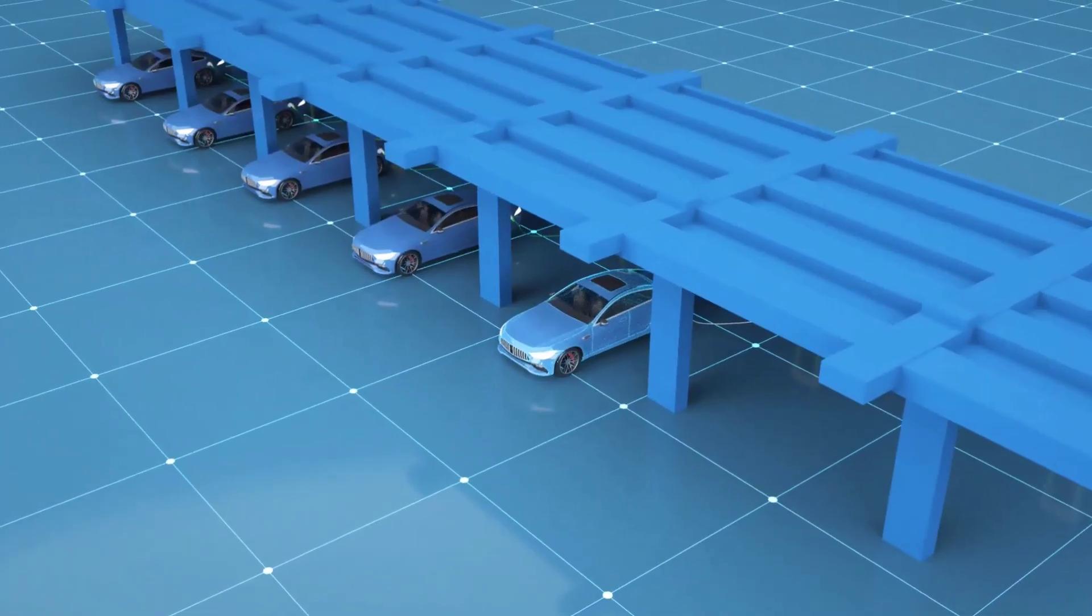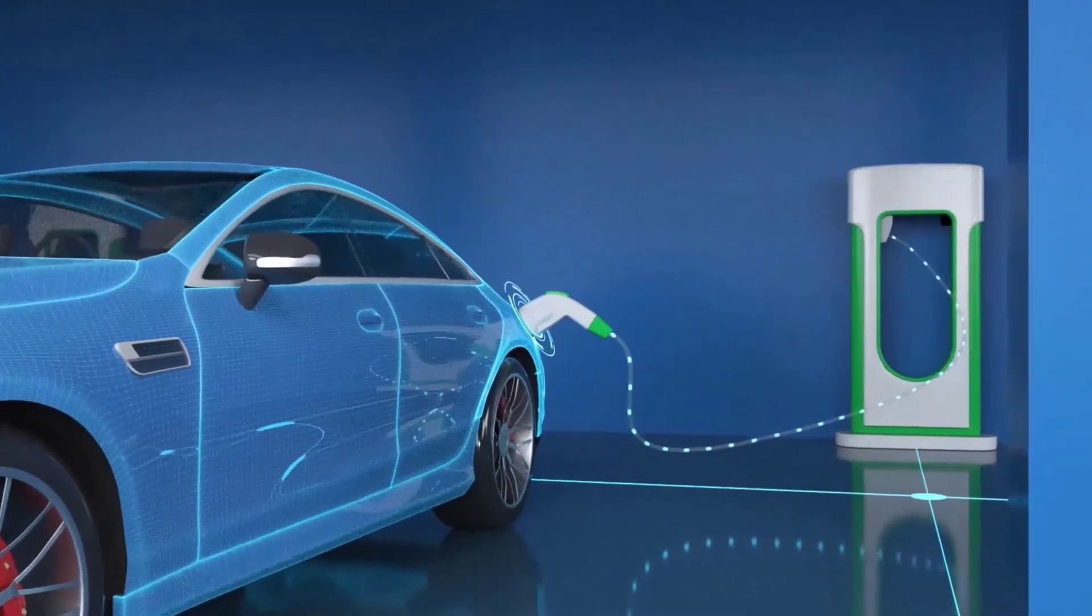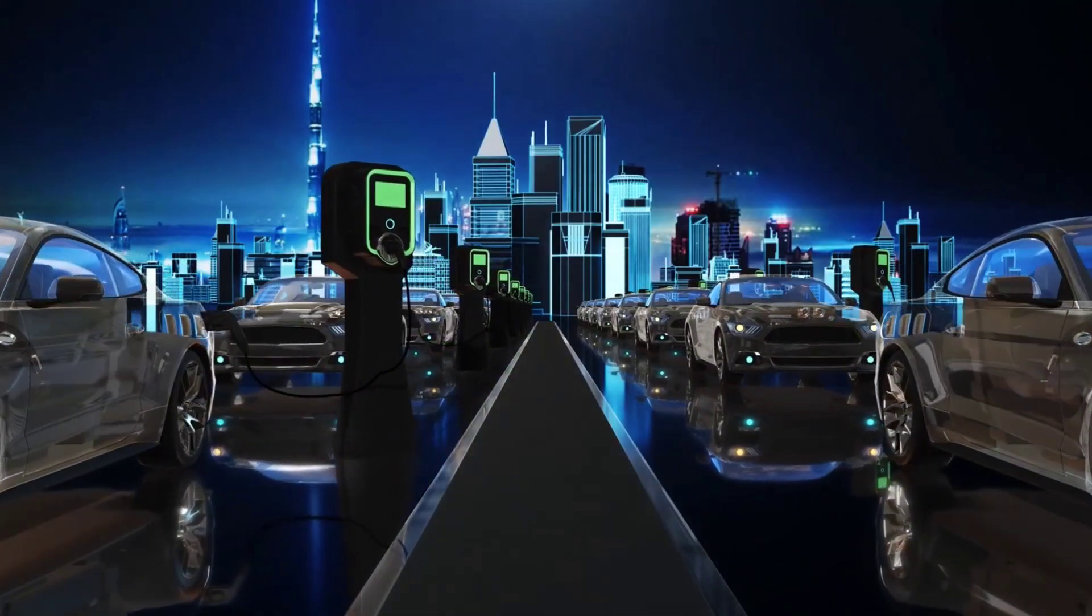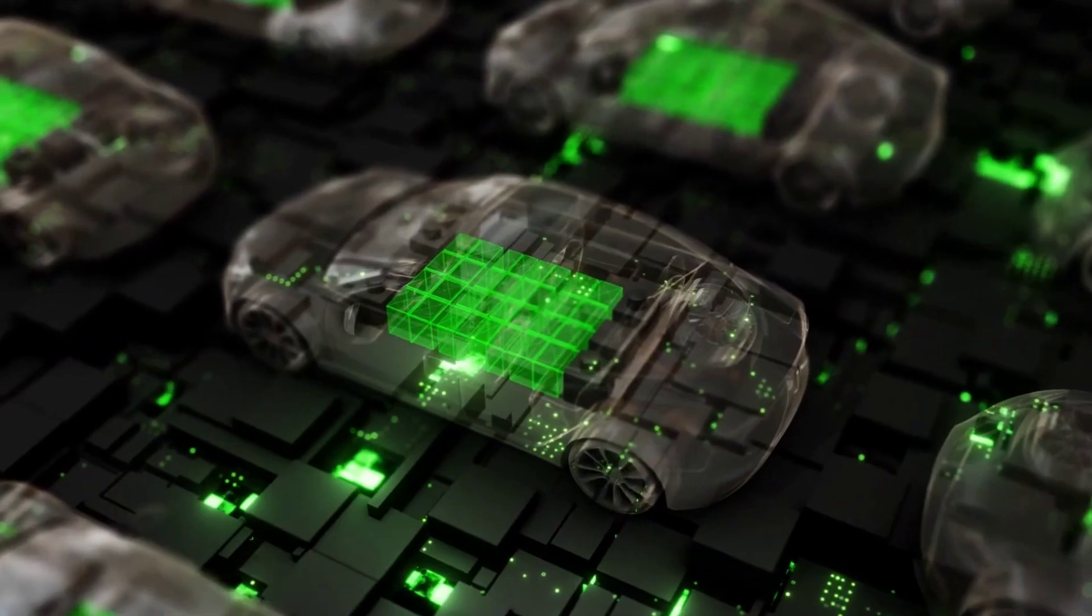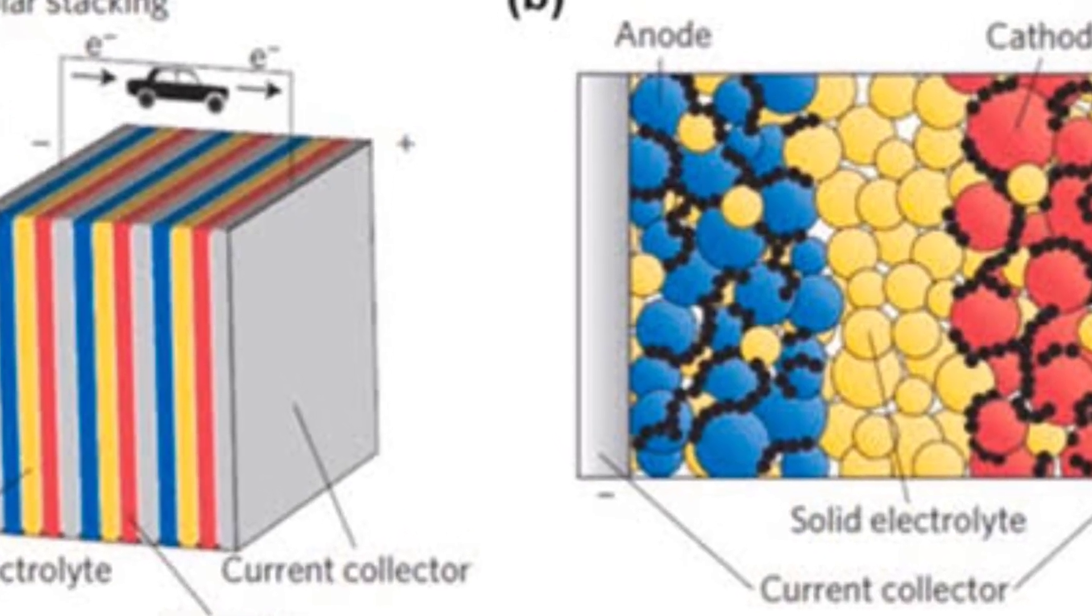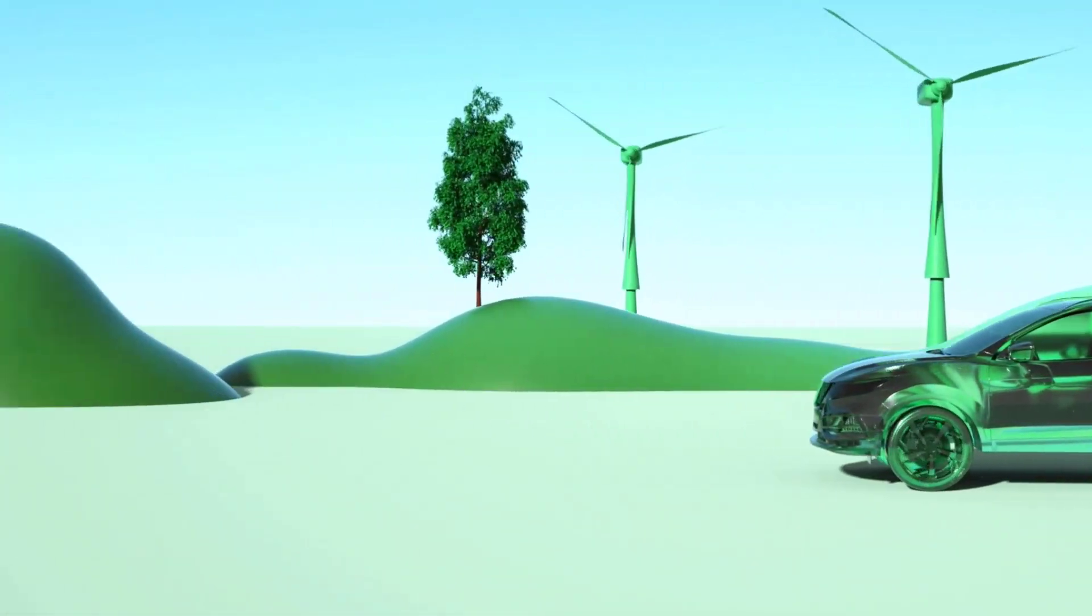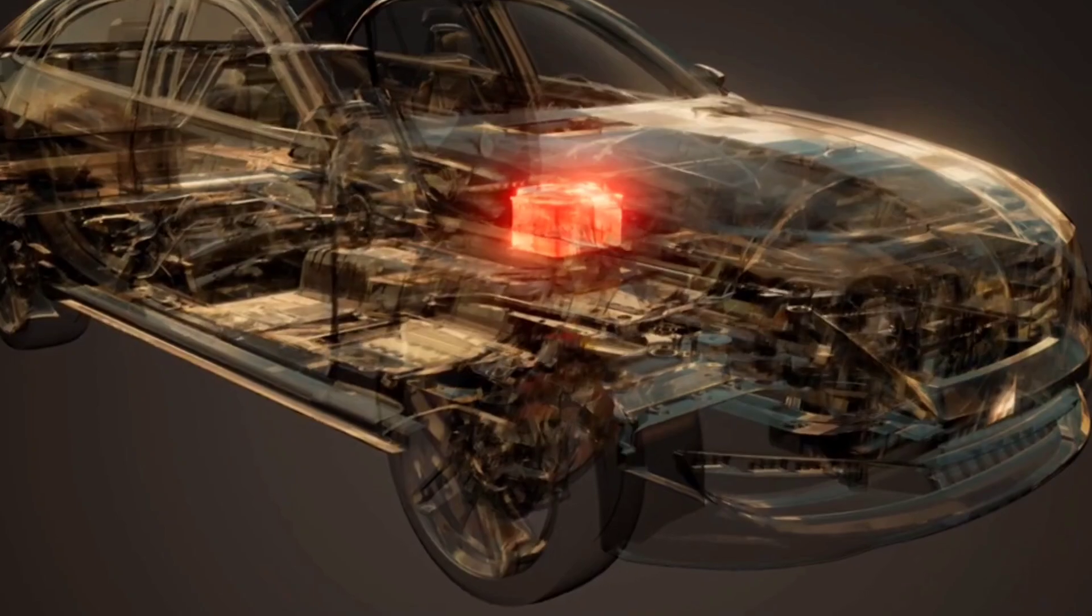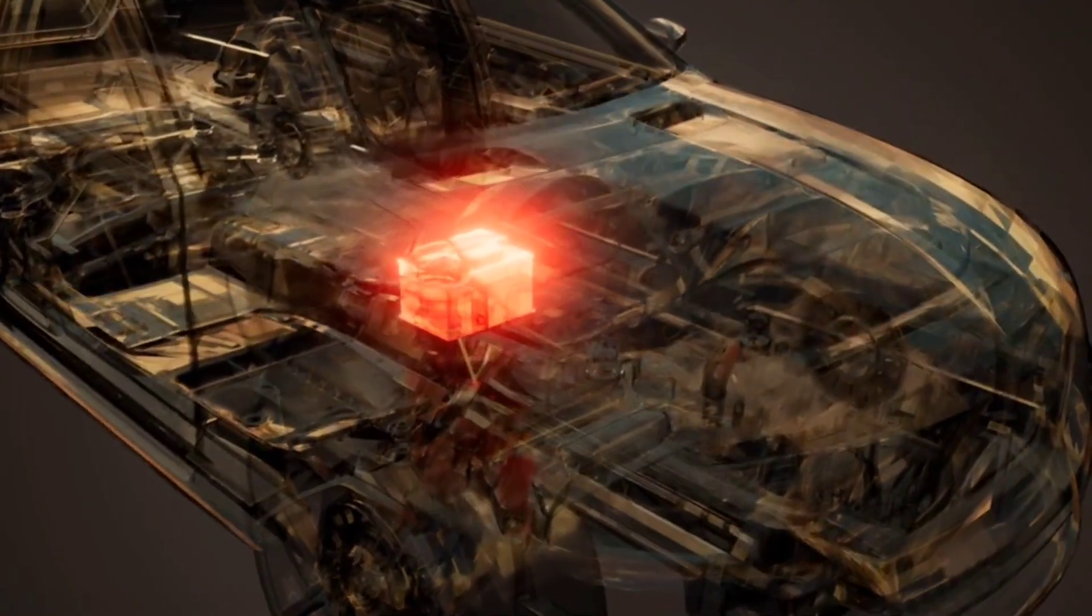Why is this a big deal for EVs? First, this higher energy density means more range per charge. It could make the once-dreaded range anxiety a thing of the past, especially for long-distance drivers. Second, solid-state batteries offer enhanced safety. With a solid electrolyte, there's a lower risk of overheating or combustion, making EVs safer than ever. And because solid-state batteries are more compact, EV manufacturers can either make cars lighter or increase battery size without making cars bulky.